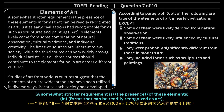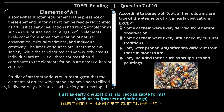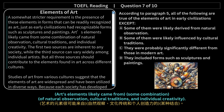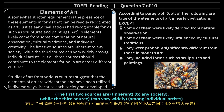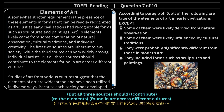A somewhat stricter requirement is the presence of these elements in forms that can be readily recognized as art, just as early civilizations had recognizable forms such as sculptures and paintings. Art's elements likely came from some combination of natural observation, cultural traditions, and individual creativity. The first two sources are inherent to any society, while the third source can vary widely among individual artists. But all three sources should contribute to the elements found in art across different cultures.